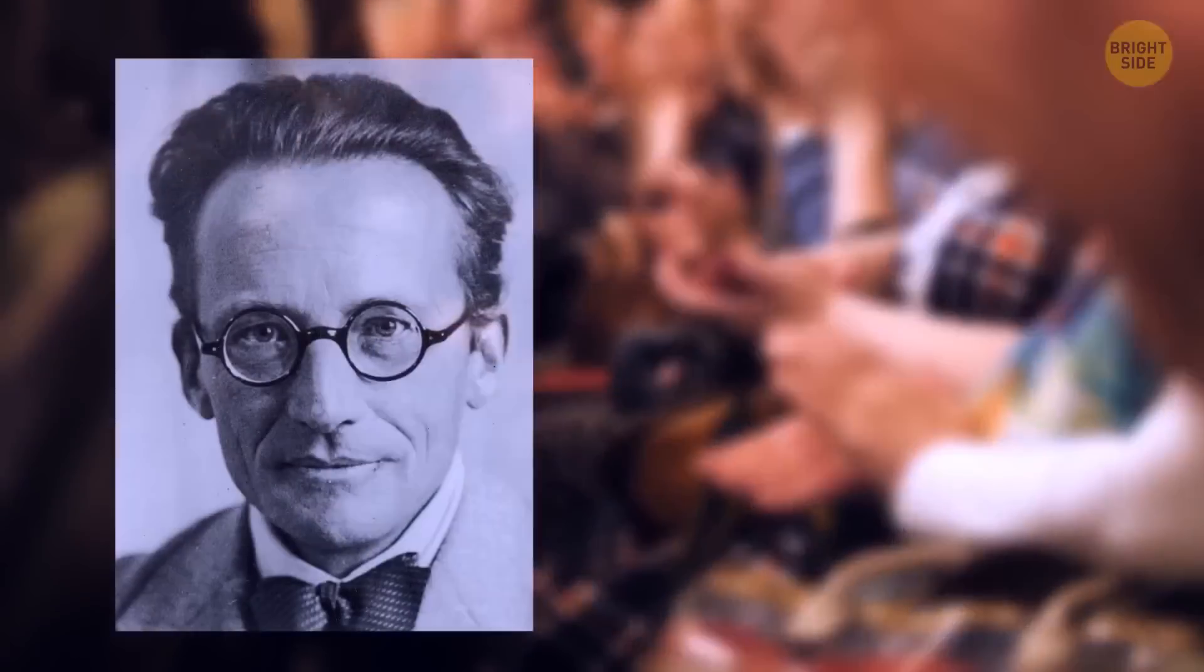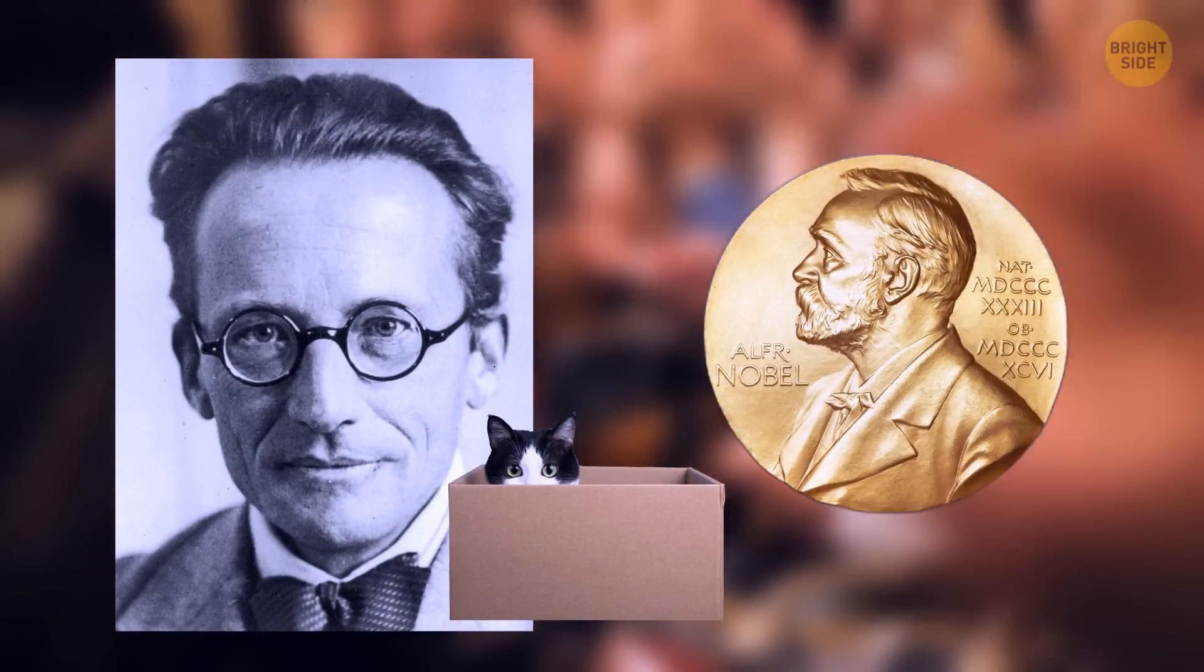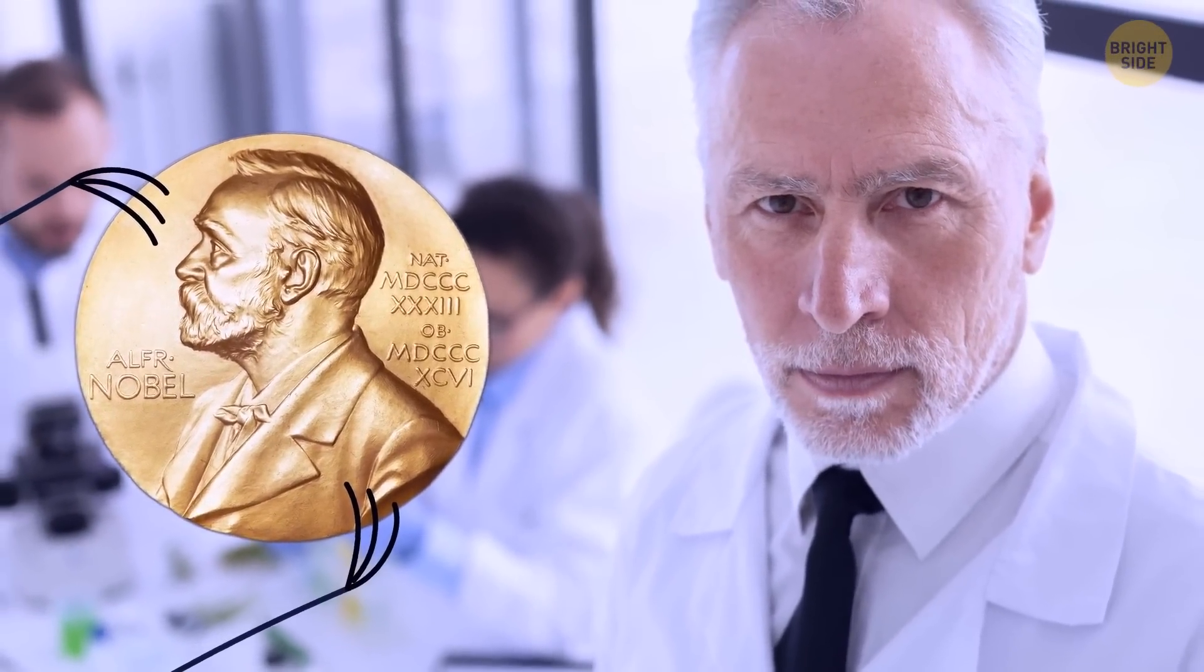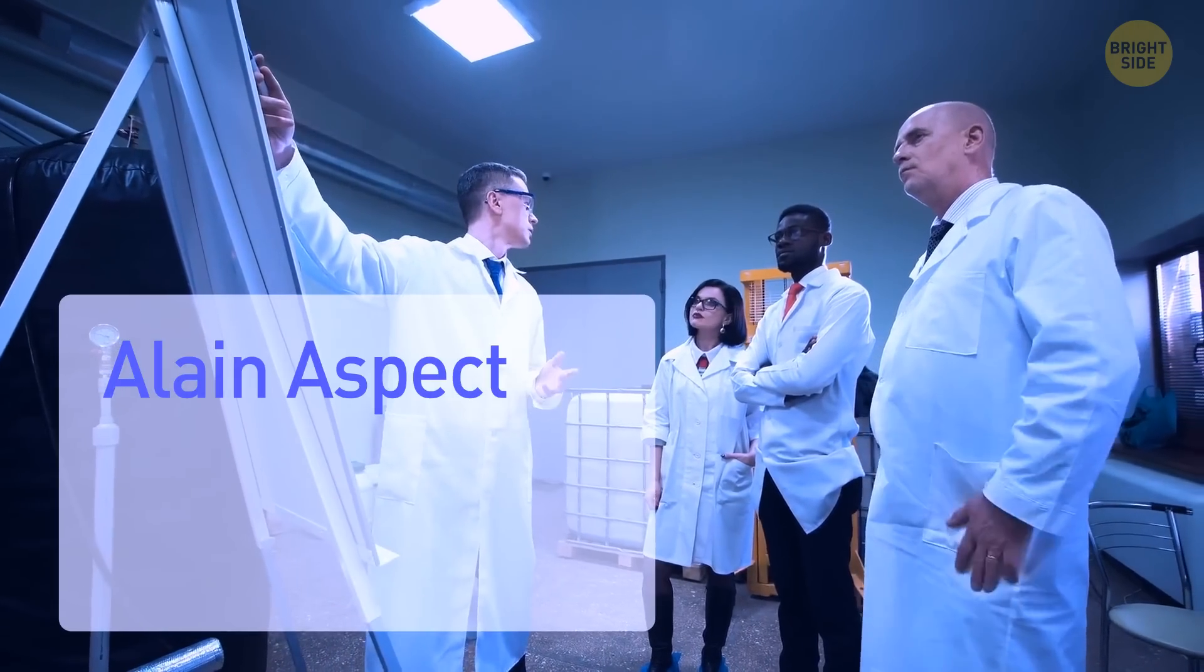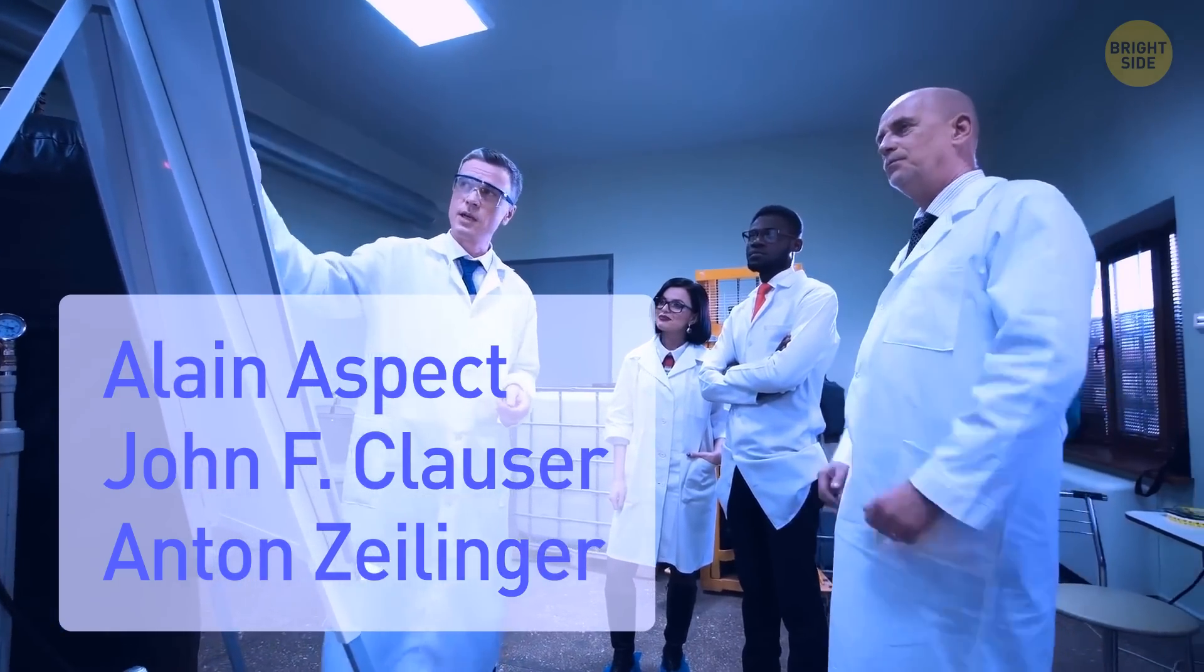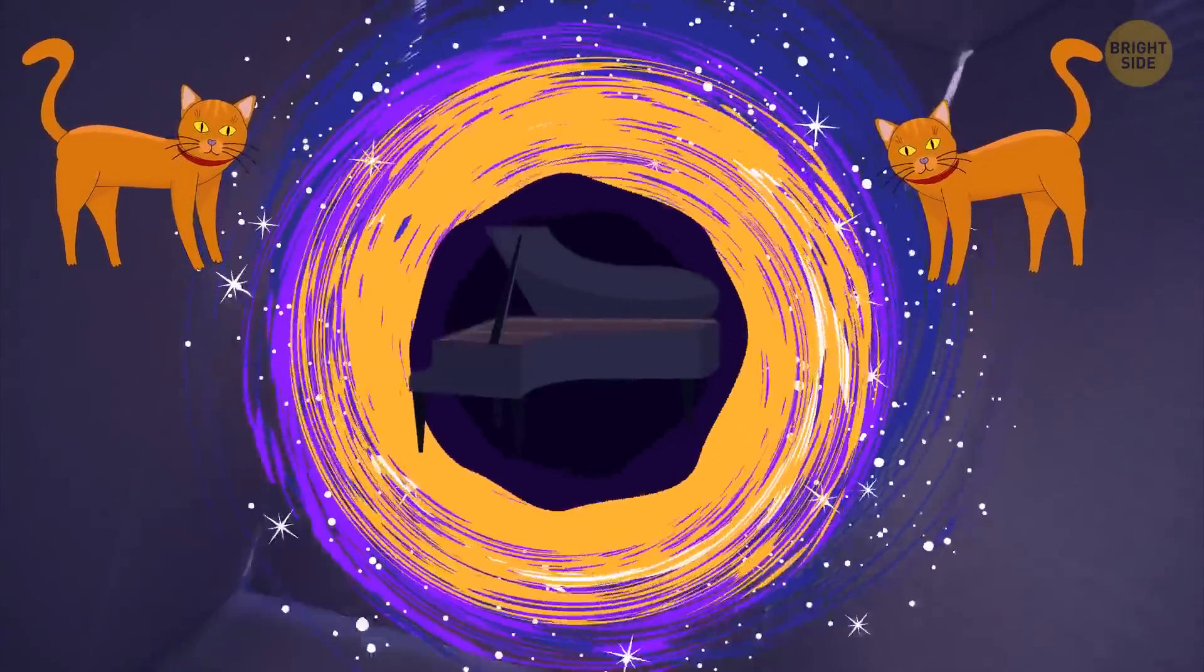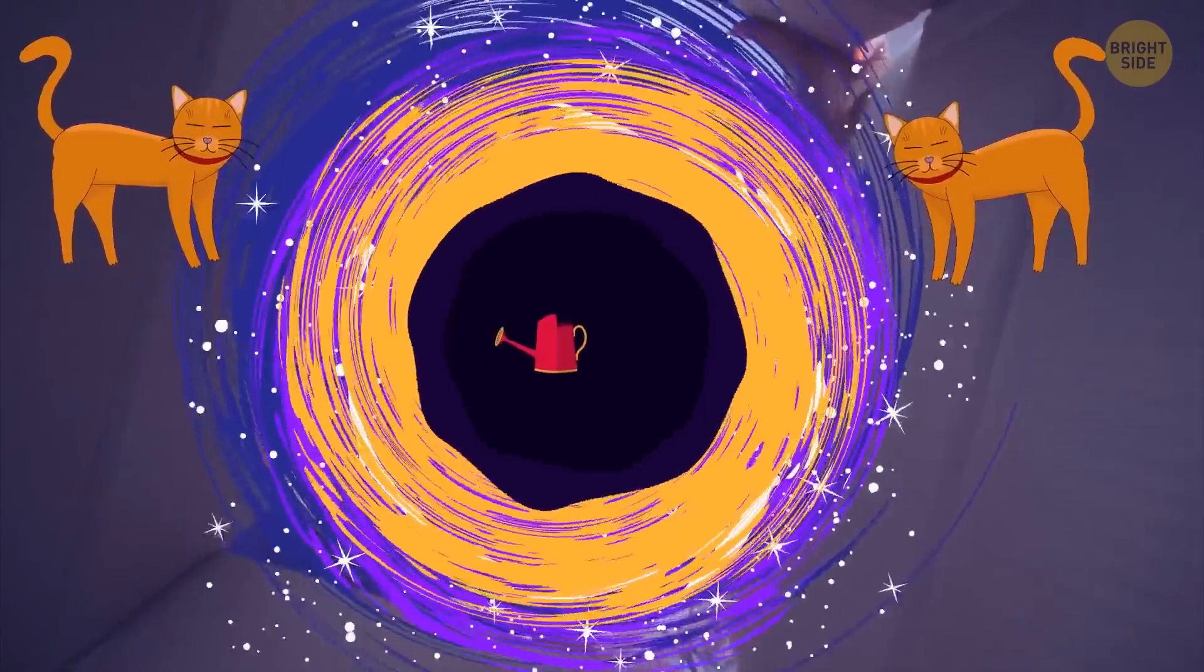Schrödinger received the Nobel Prize in 1933. Even though it wasn't for this discovery. And in 2022, three more scientists received the Nobel Prize for another discovery in this field. These scientists were Alan Aspect, John F. Clauser, and Anton Zeilinger. They got it for their experiments that involve entangled quantum states. What does all this tell us? Guess now we'll have to look for explanations in some kind of quantum mechanical magic.